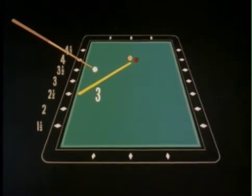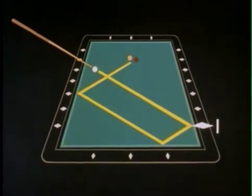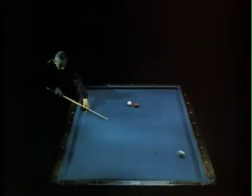You see, the cue position is four. Now a simple subtraction. Three from four is one. So if he shoots for the first diamond, he should make it. It's called playing the diamond system.